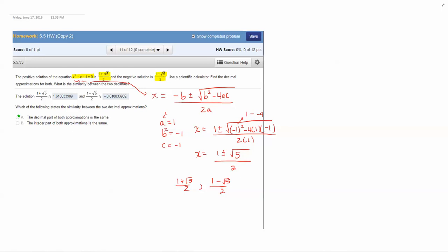So now we want to find the decimal approximations for both and just look at what we get. So you'll need a calculator to do this. Most calculators allow you to type this in from left to right.